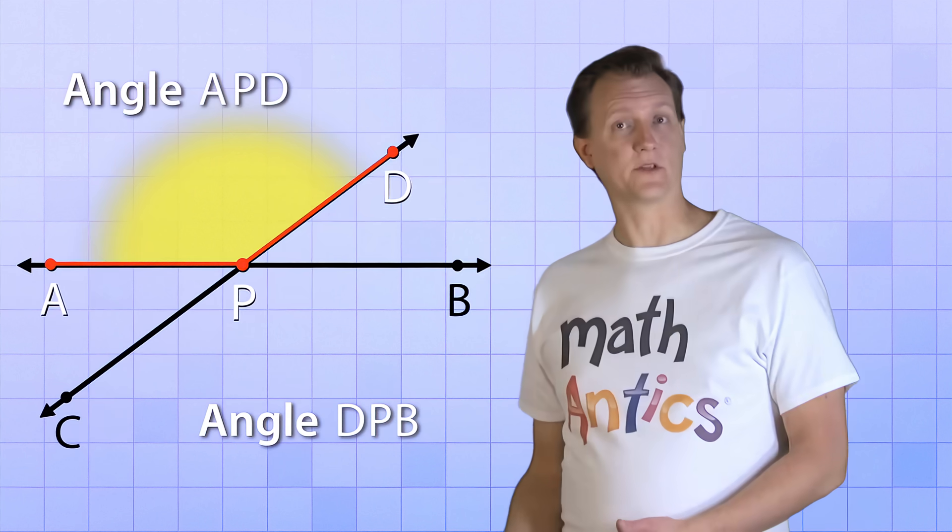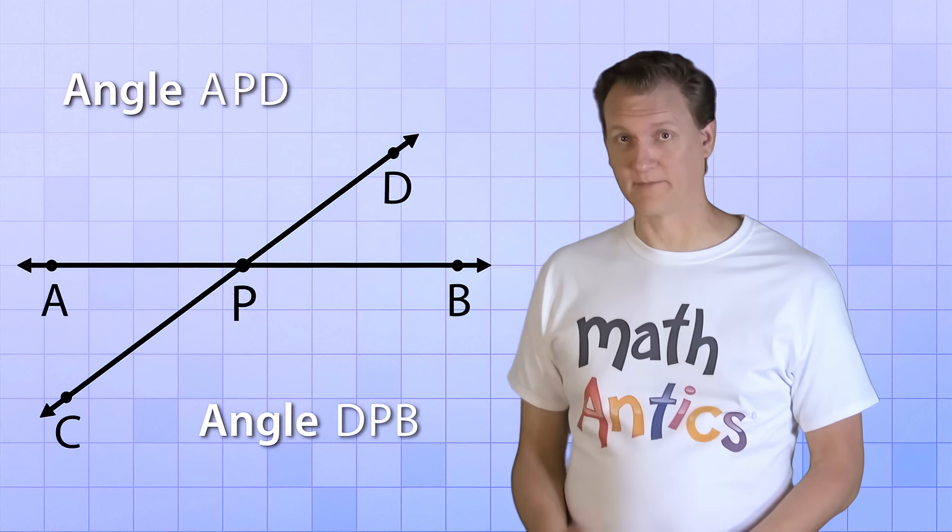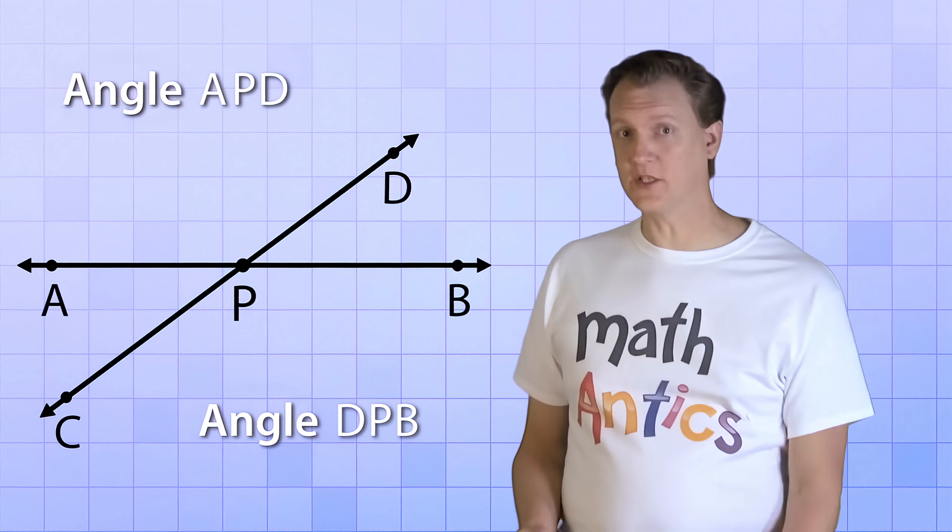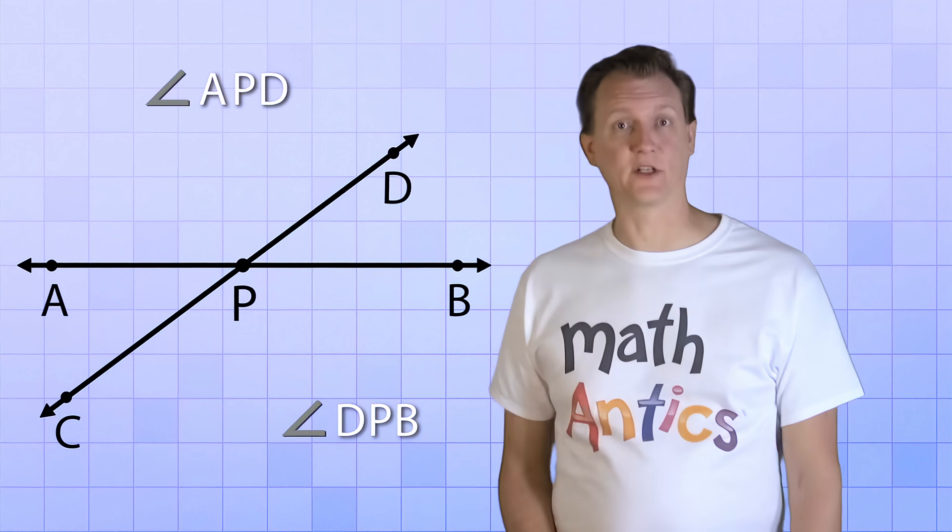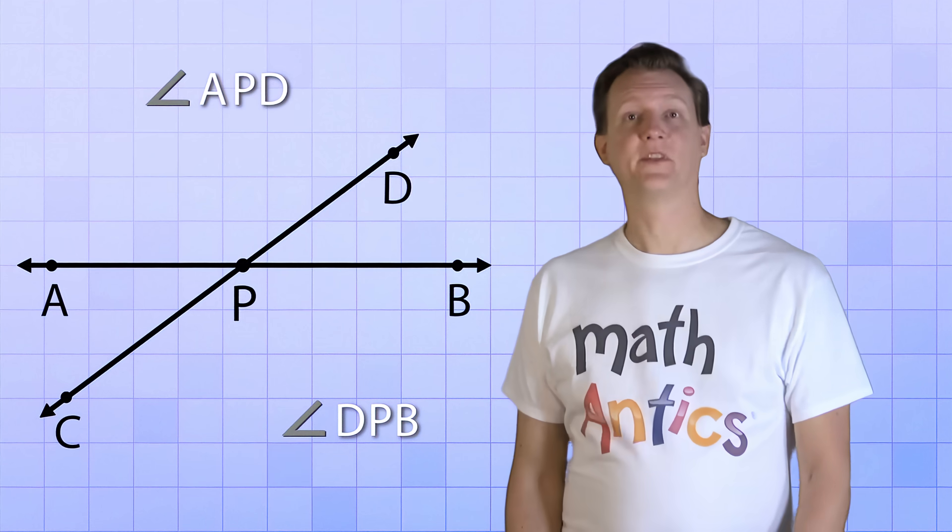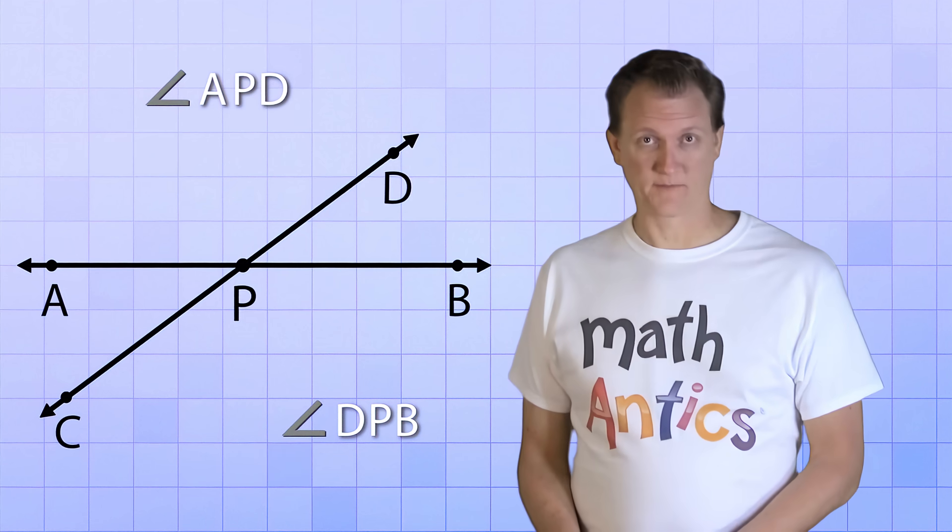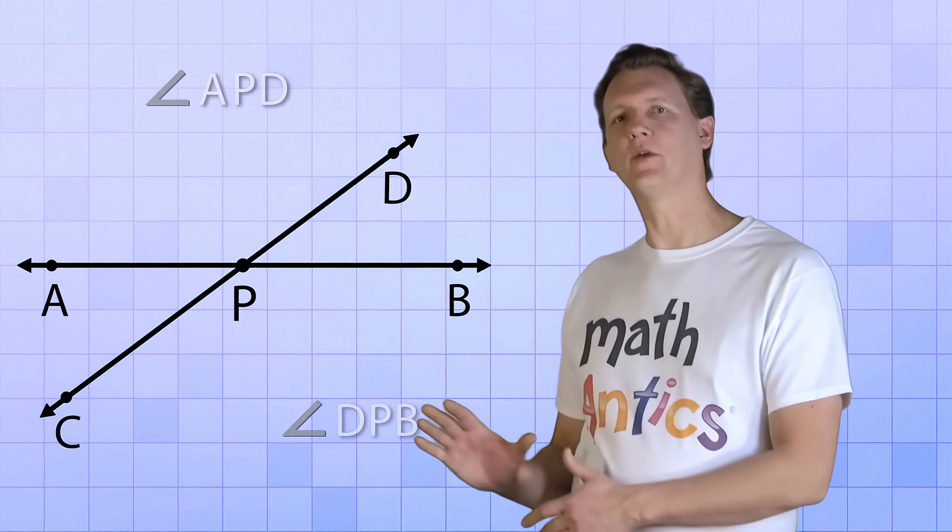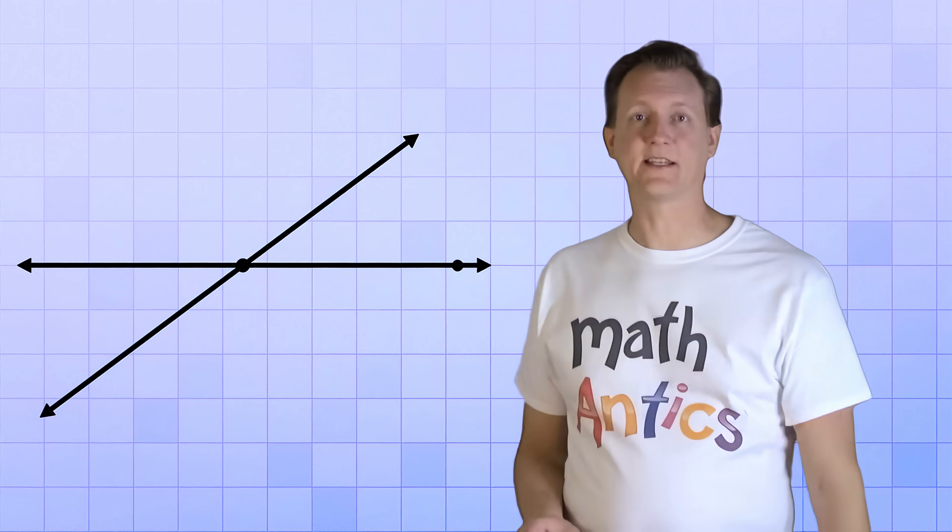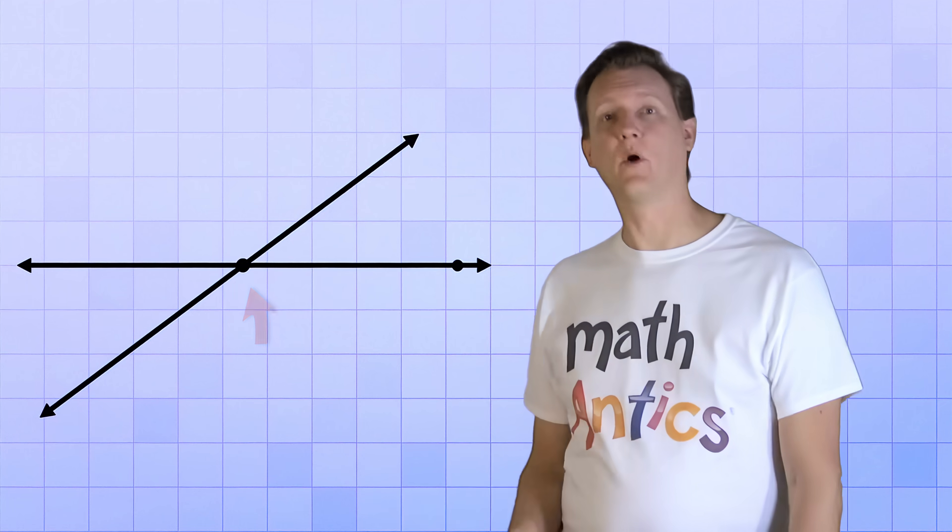Now when naming angles, there's a nice shorthand that we can use. Instead of writing the word angle over and over again, we can just use the angle symbol instead, which looks like this. But there's an even simpler way to name angles. To learn that way, let's erase all the points and letters on our lines, except for the intersection point and this one point here.